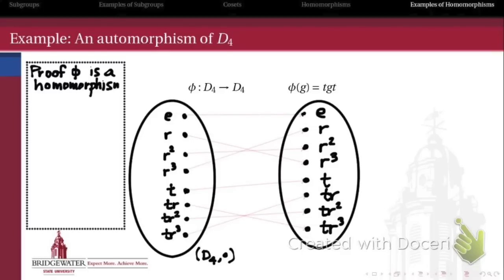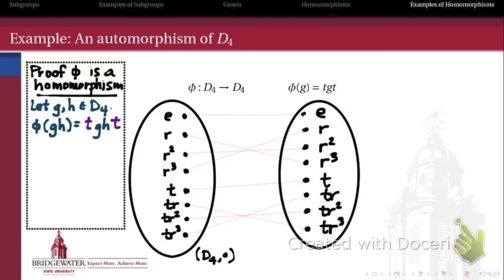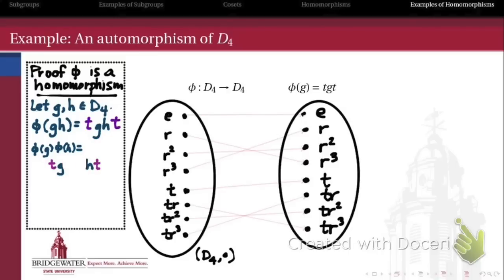Here's a proof that φ is indeed a homomorphism. We just need to show the product rule is satisfied. Take two arbitrary elements g and h in D4. We need to show that φ(gh) = t(gh)t equals φ(g)·φ(h). Well, φ(g) = tgt and φ(h) = tht. Multiplying these together and using the associative property, then noting that t² is the identity, we simplify to get tght. Therefore φ(gh) = φ(g)·φ(h), so φ is a homomorphism from D4 to D4 — making it an endomorphism of D4.